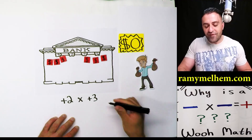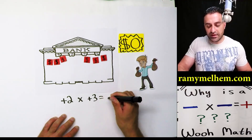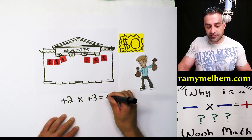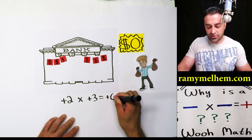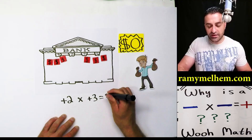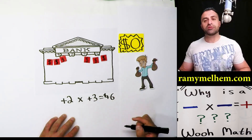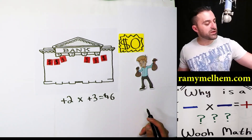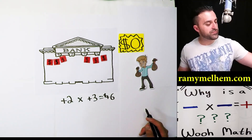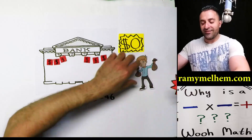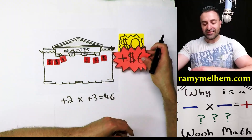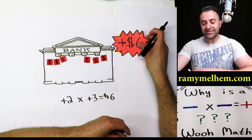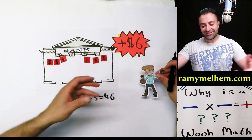And effectively, that's going to make $6 — positive $6. That's how much money he has in his bank account. So his new bank statement says $6.